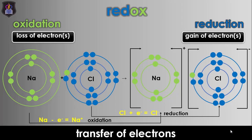When studying oxidation and reduction in terms of electron transfer, always remember the mnemonic OIL RIG — that is, Oxidation Is Loss of electrons, Reduction Is Gain of electrons.